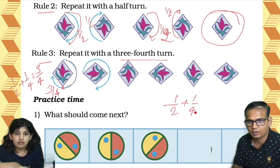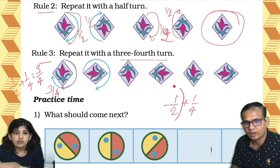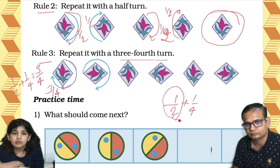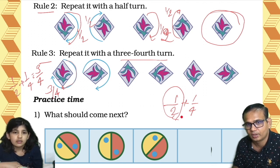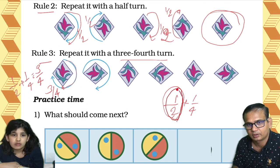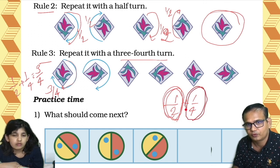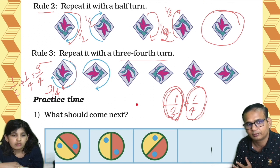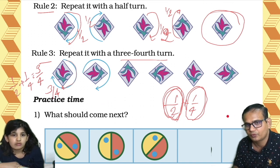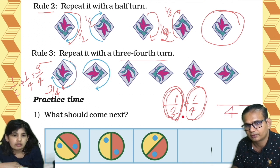If you add this quarter to half it will become three-fourth. How do we calculate that? First you take LCM. Here four is there. This is half and this is quarter. If you add this quarter to half, it will become three-fourth.